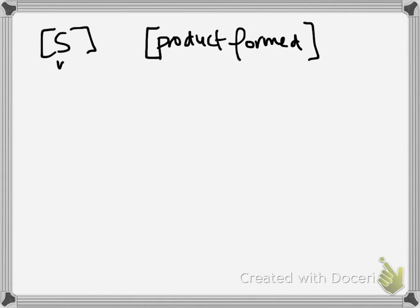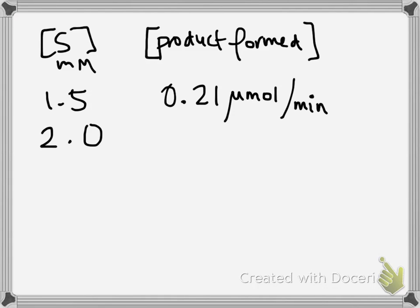So for example, when you put in 1.5 millimolar of substrate you got 0.21 micromole of product per minute. If you used 2.0 millimoles of substrate you formed 0.24 micromole per minute.